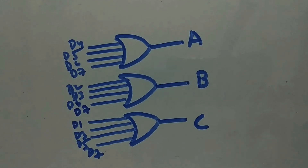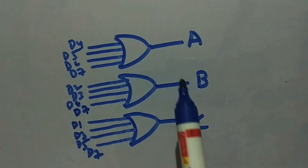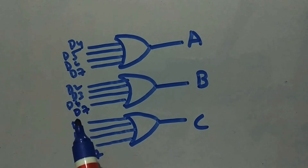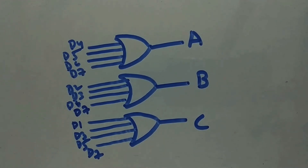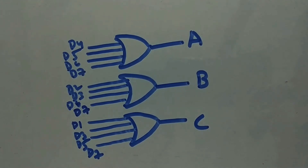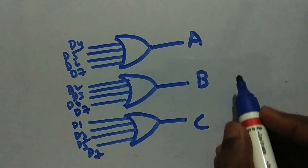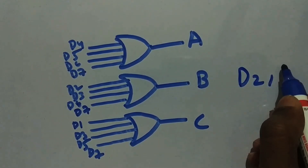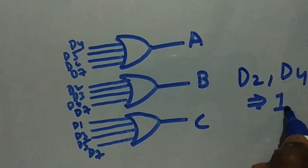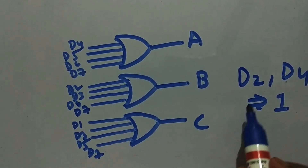Here is the gate circuit for the 8×3 encoder: D4, D5, D6, D7 feed into the A OR gate; D2, D3, D6, D7 feed into B; and D1, D3, D5, D7 feed into C. Now let's discuss the limitations. Suppose we give D2 and D4 both high at the same time — when only D2 is high, the output should be 010, and when only D4 is high it should be 100.